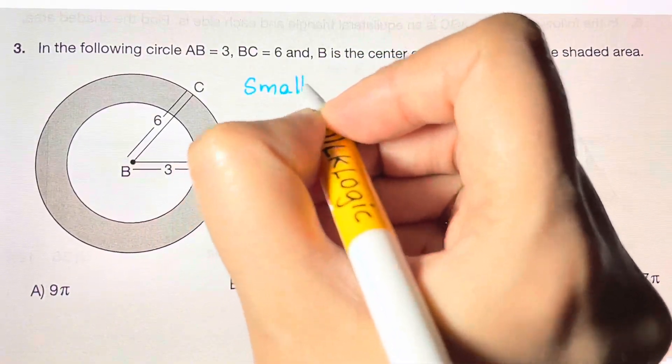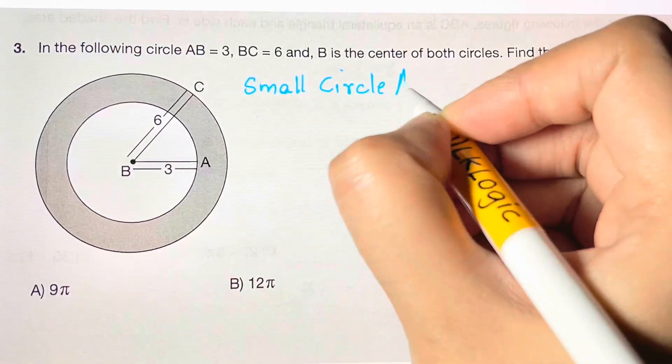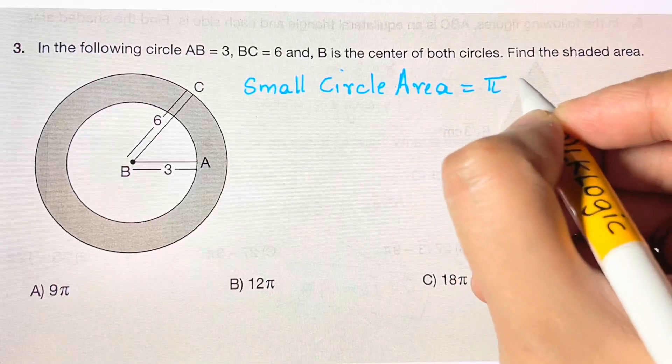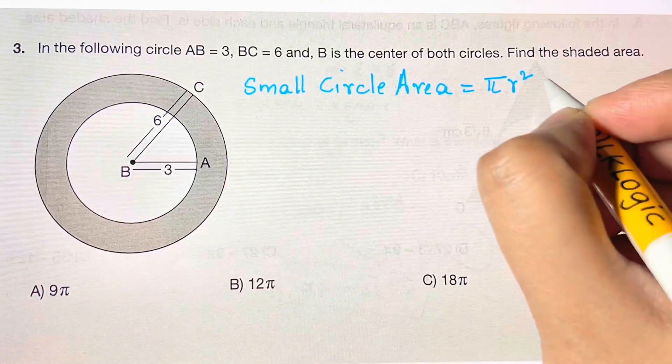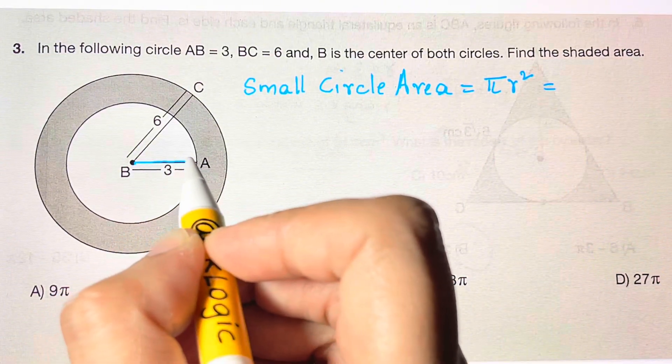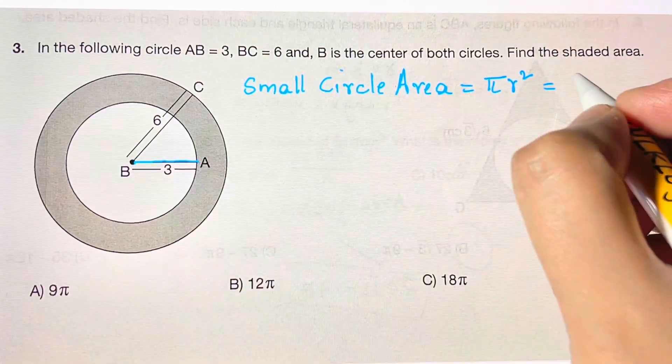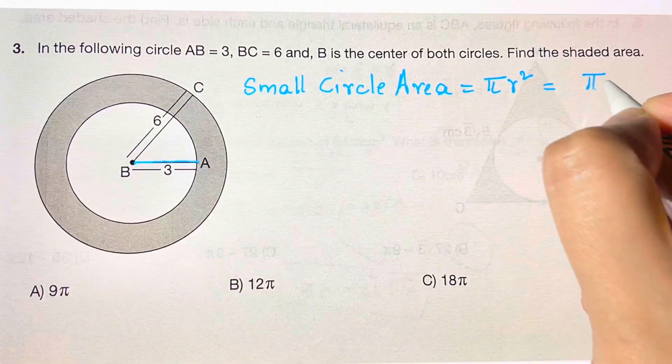The smaller circle area equals πr². What is the radius of the smaller circle? It's 3, so we plug that in. 3² is 9, so we have 9π.